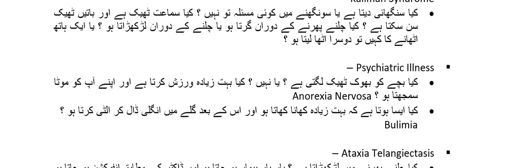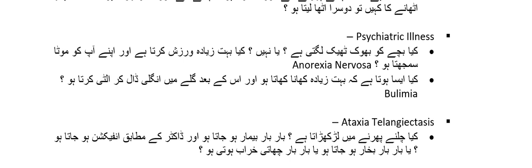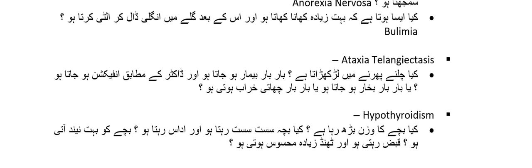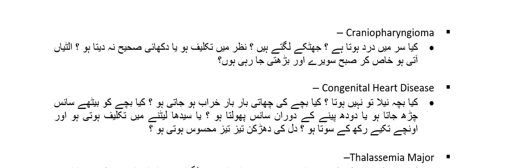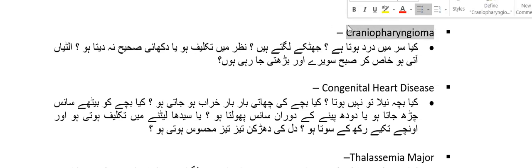Then you have to rule out Ataxia telangiectasia. Then you have to rule out hypothyroidism, and then you have to rule out craniopharyngioma — asking whether the child is having symptoms suggestive of a brain tumor such as headaches or visual problems.